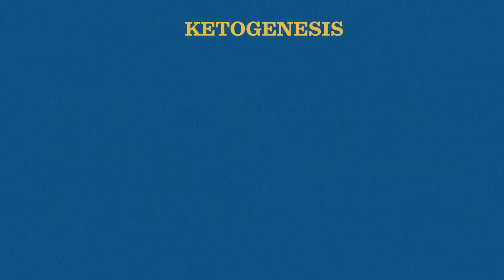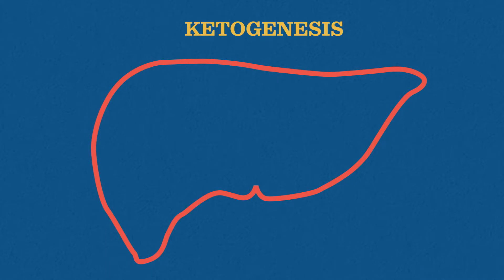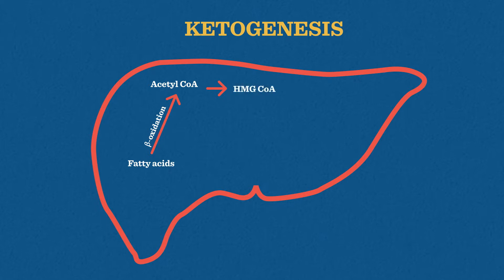The process of making ketones is called ketogenesis, and it occurs mainly in the mitochondria of the liver. Fatty acid molecules are enzymatically broken down via beta oxidation to form acetyl-CoA. Then, through a series of reactions, acetyl-CoA is converted to 3-hydroxy-3-methylglutaryl-CoA, which goes on to produce the first ketone body, acetoacetate.